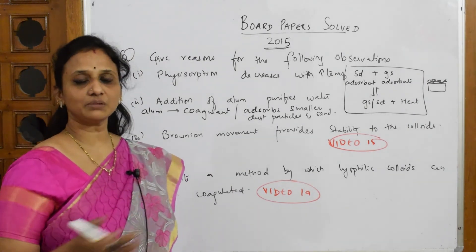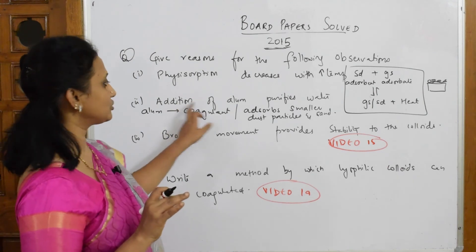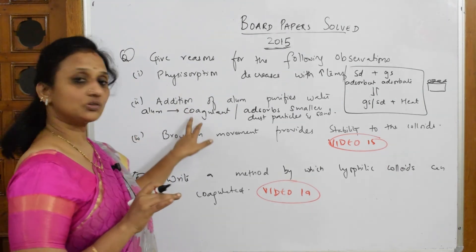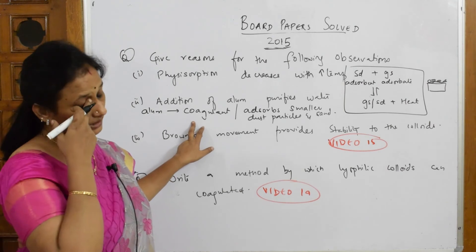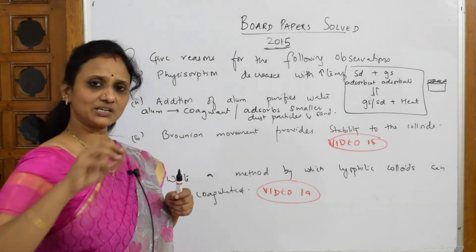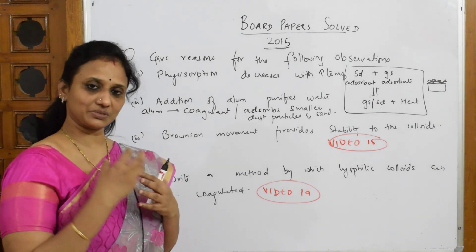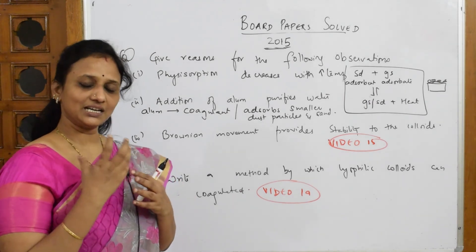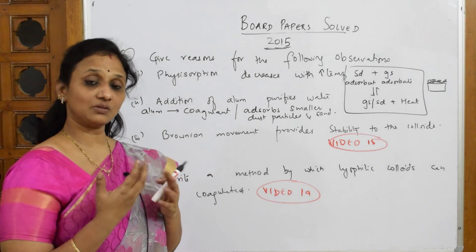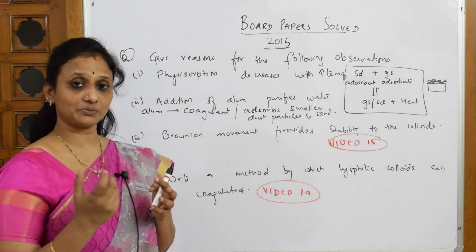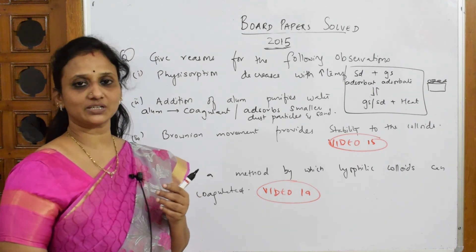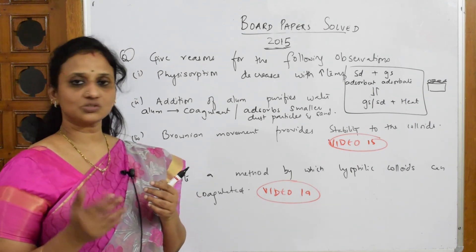Larger, heavier particles settle down at the base of the tank and are separated by filtration. So you write: addition of alum purifies water because alum acts as a coagulant — this is a keyword present in the marking scheme. It pulls small dust particles together; they adsorb onto the alum surface, and the remaining heavier particles settle at the base of the tank and are removed.